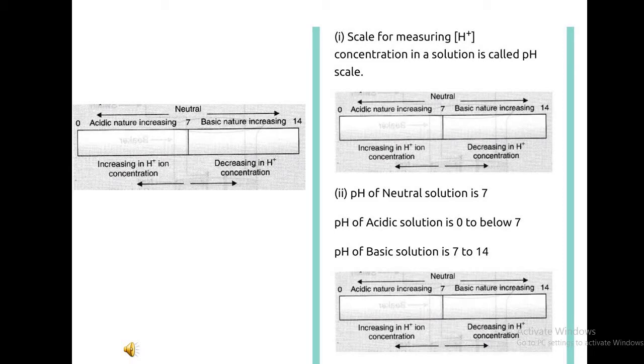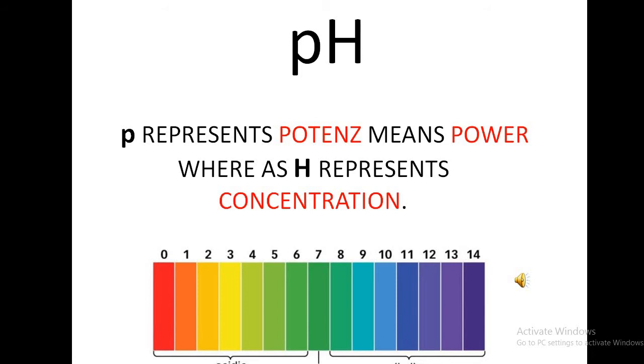In pH, P represents potence, means power in German language, whereas H represents concentration.